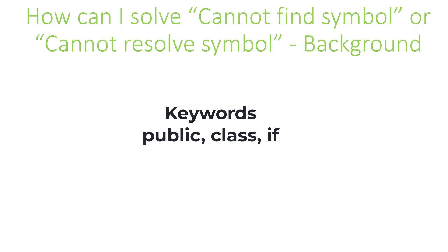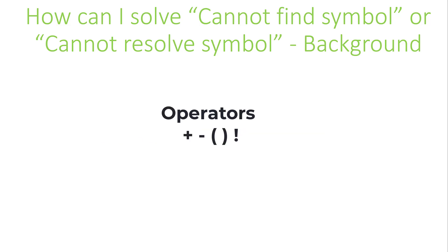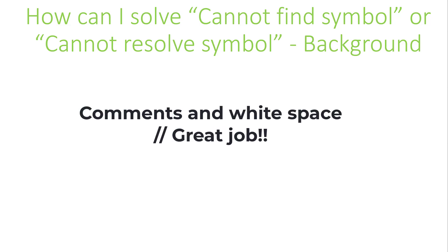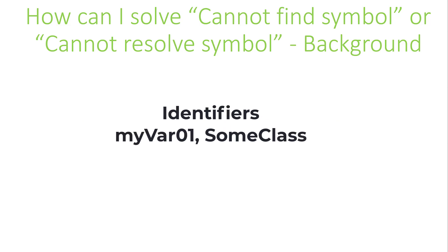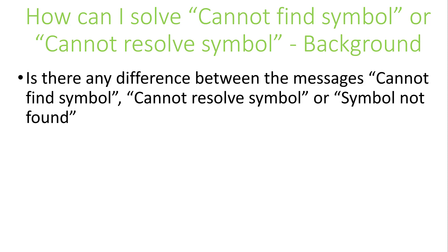Java source code also contains literals like true, false, the string 'hello world', and so on. Operators and other non-alphanumeric tokens like plus, minus, exclamation point. Comments and whitespace. And finally, identifiers like variable names, method names, class names, etc. The cannot-find error messages are about the identifiers.